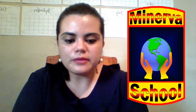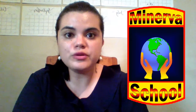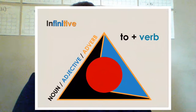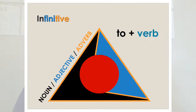Today we will learn the last of our verbals: the infinitives. The formula is 'to' plus the verb — the word 'to' plus the verb in infinitive, which is the base form of the verb. We will see some examples of it.